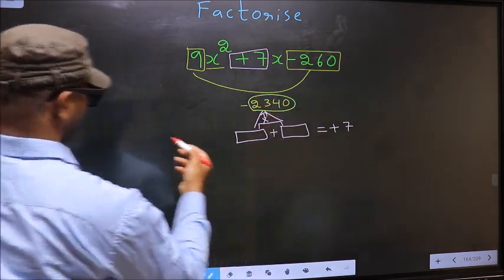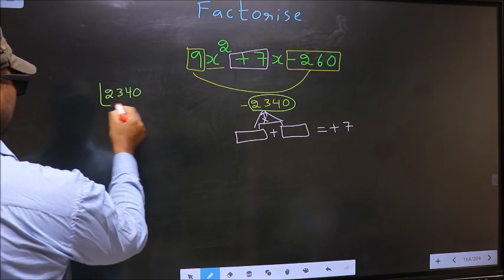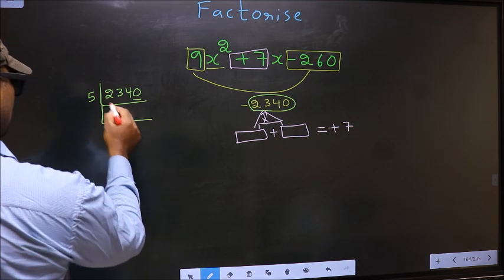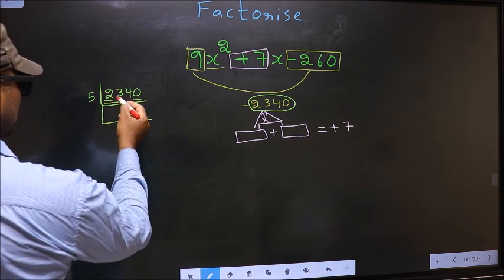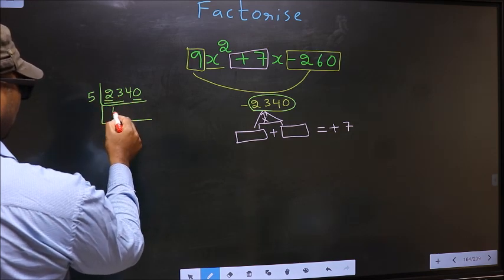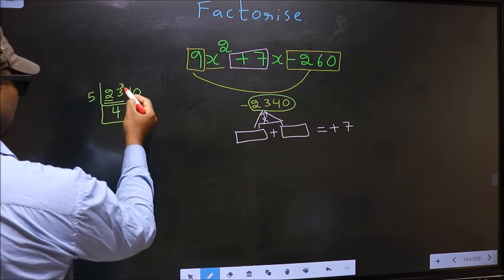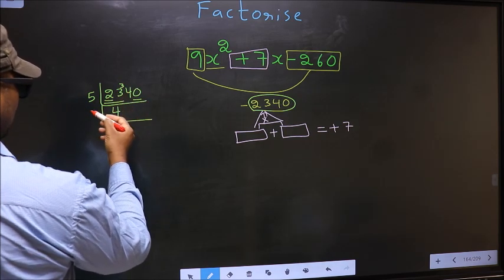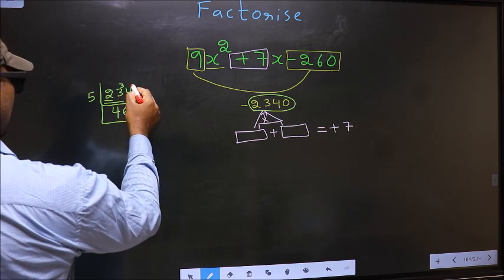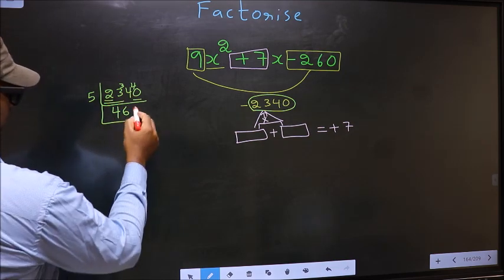So the LCM we take here. The last digit 0, so take 5. The first number 2 smaller than 5, so take two numbers 23. A number close to 23 in 5 table is 5 fours 20. 23 minus 20, 3 carried forward 34. A number close to 34 in 5 table is 5 sixes 30. 34 minus 30, 4 carried forward 40. When do we get 40 in 5 table? 5 eights 40.